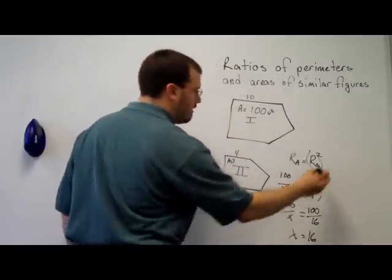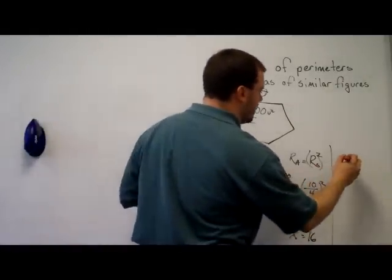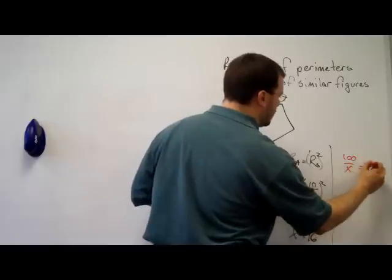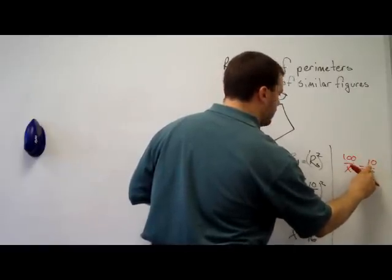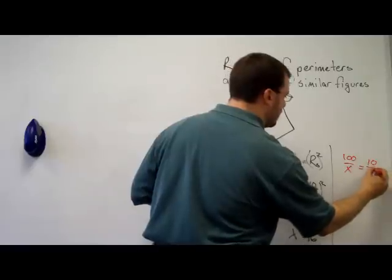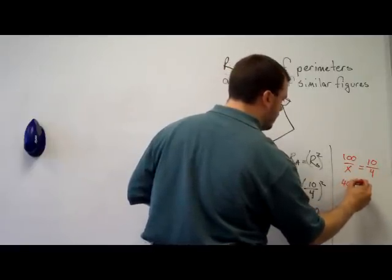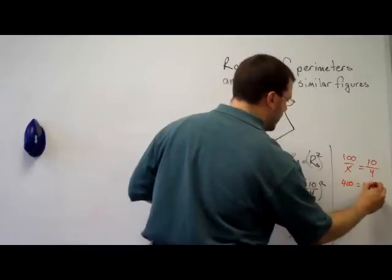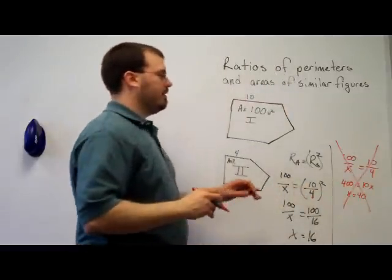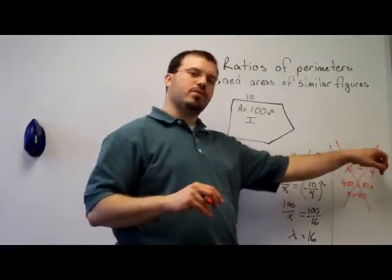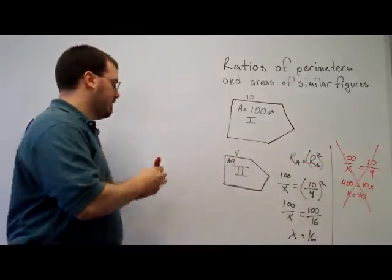But that's a different answer than what students often do, and they just set up 100 over x equals 10 over 4, and they accidentally set the ratio of the areas equal to ratio of sides, and get 400 equals 10x, and x equals 40. This would be incorrect. That would be setting the ratio of areas equal to the ratio of sides, but the ratio of the areas is equal to the ratio of the sides squared.